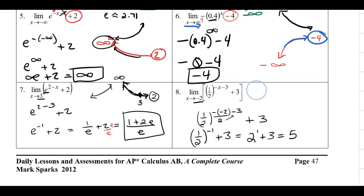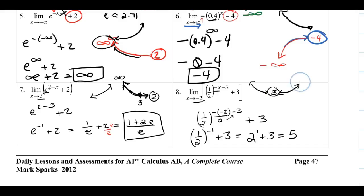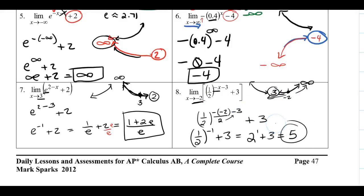Similarly for number 8 with a base less than 1 (a decay function, flipped horizontally), the graph approaches 3 to the left and positive infinity upward. But since the problem asks at x = -2 — a specific value — direct substitution gives the limit, which equals the function value found through direct substitution.